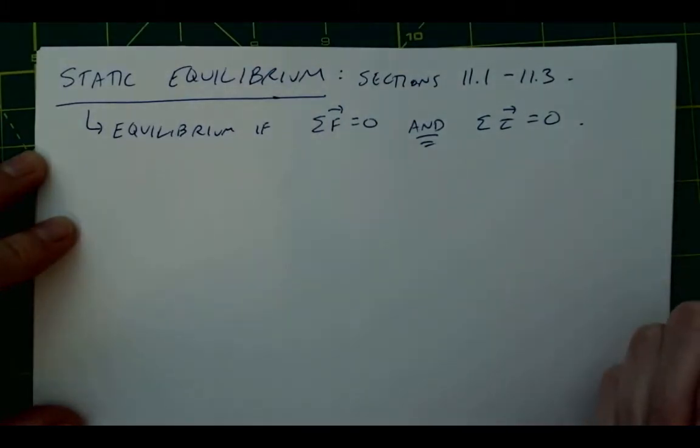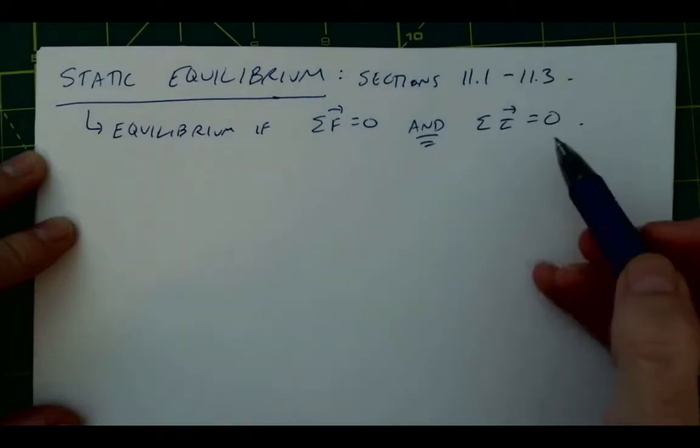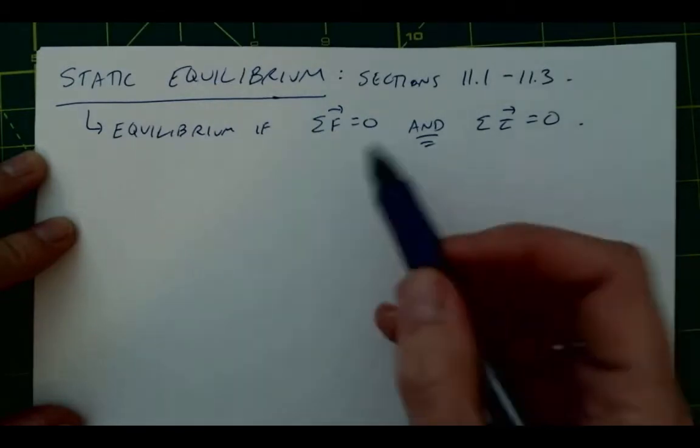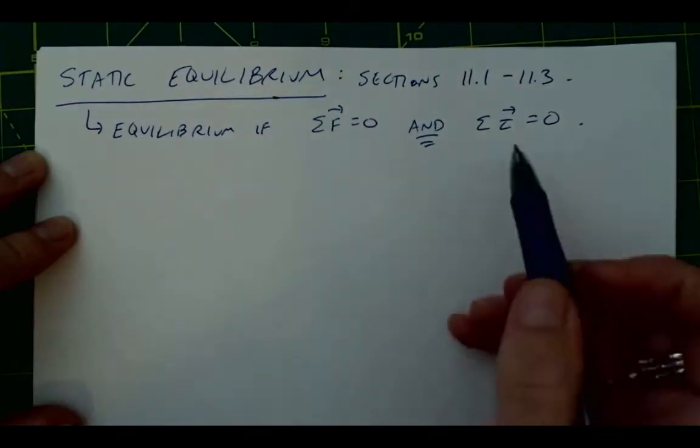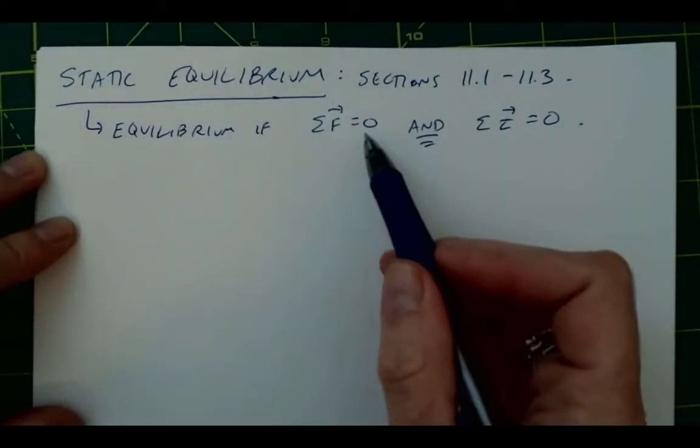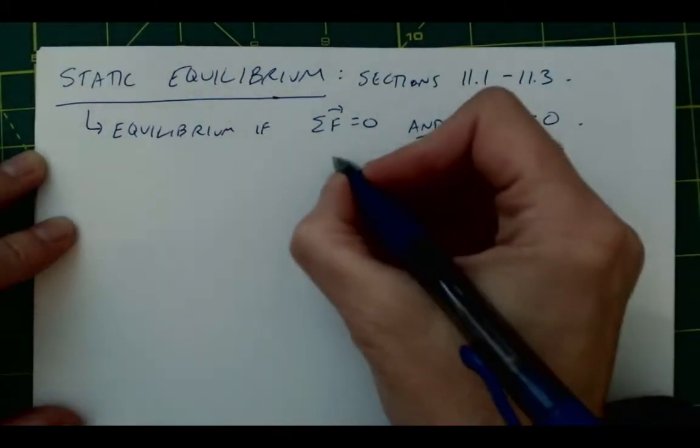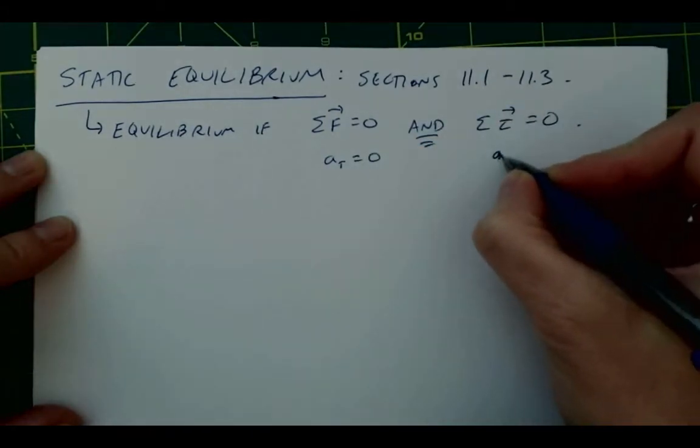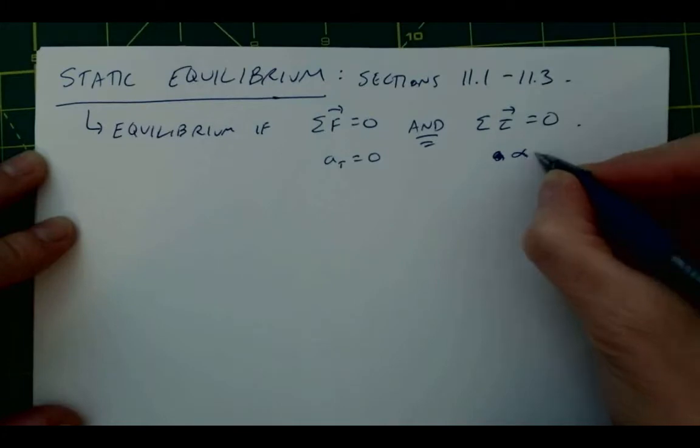then you do have an angular acceleration, and vice versa. You can have no net torque, in which case something won't have an angular acceleration, but you can have a linear acceleration. So to be in true equilibrium, you have neither a tangential acceleration, or a linear acceleration, or sorry, angular acceleration.